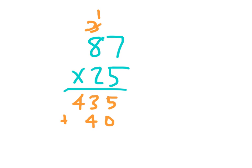2 times 8 is 16, plus 1 is 17. And then I add those two numbers together for our exact answer. Our exact answer for 87 times 25 is 2,175.